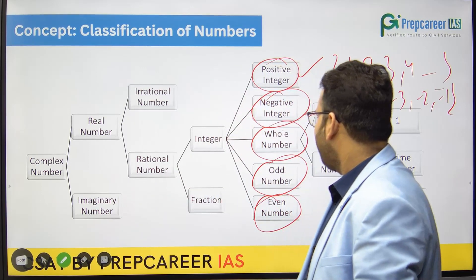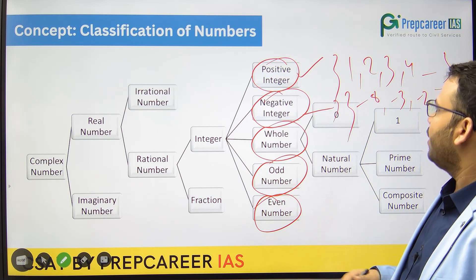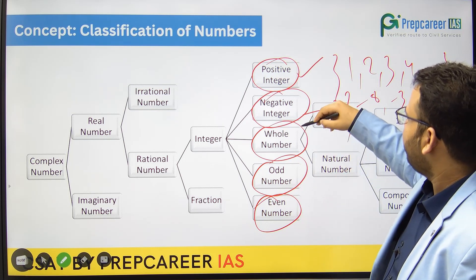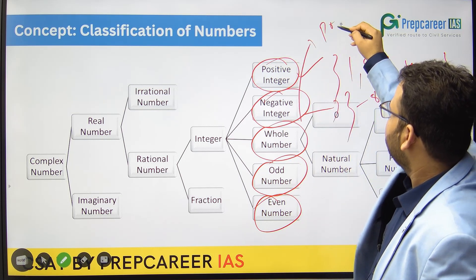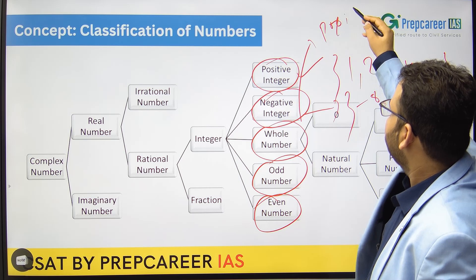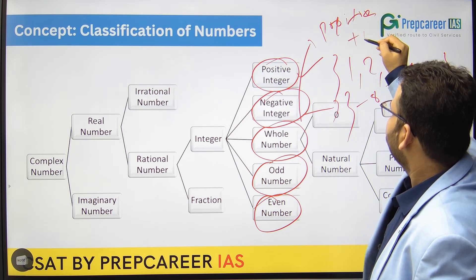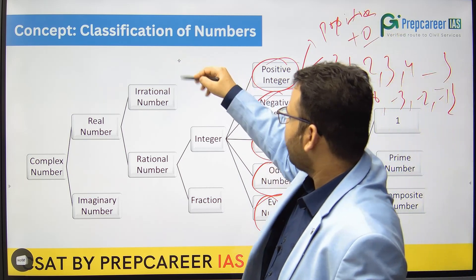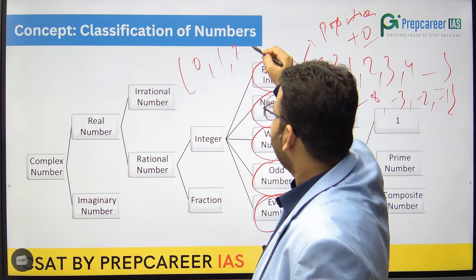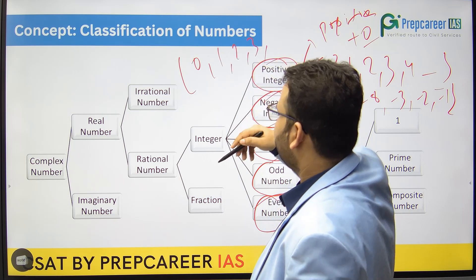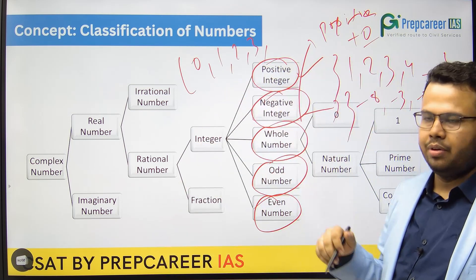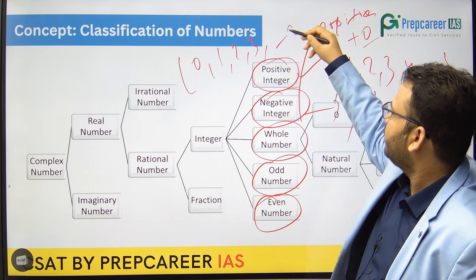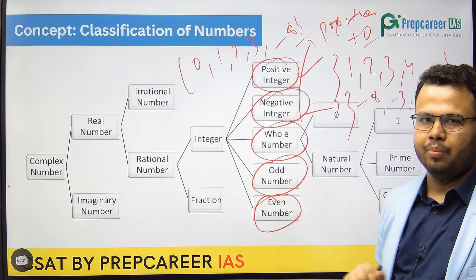Now, what is a whole number? Whole numbers are nothing but positive integers plus 0. So whole numbers actually start with 0 and go like 1, 2, 3 till infinity — same as positive integers but including 0. This is what we call the whole number.